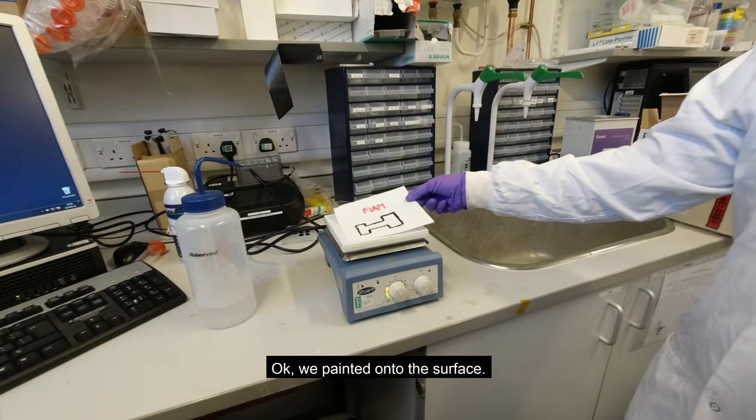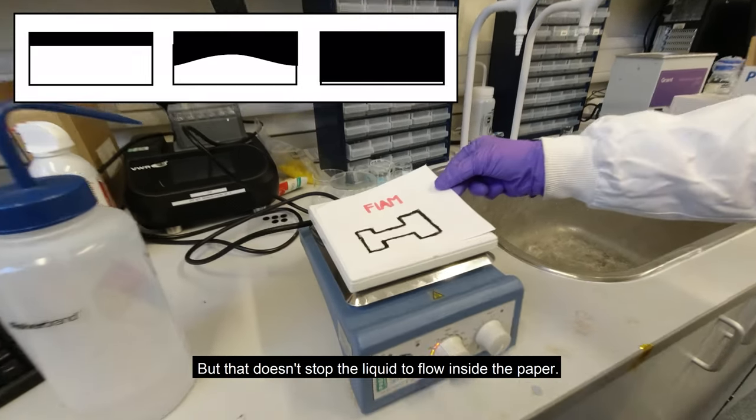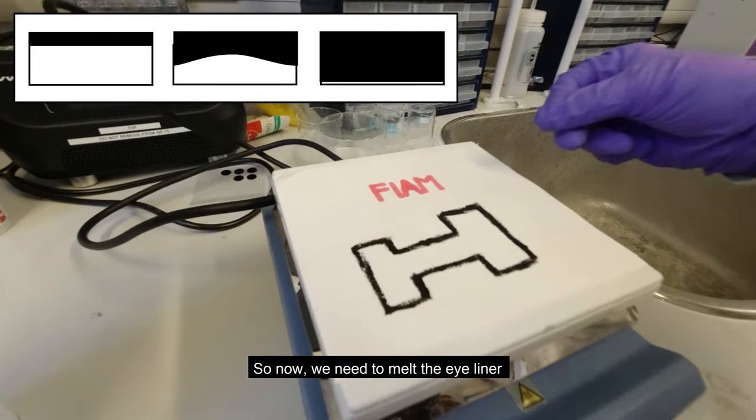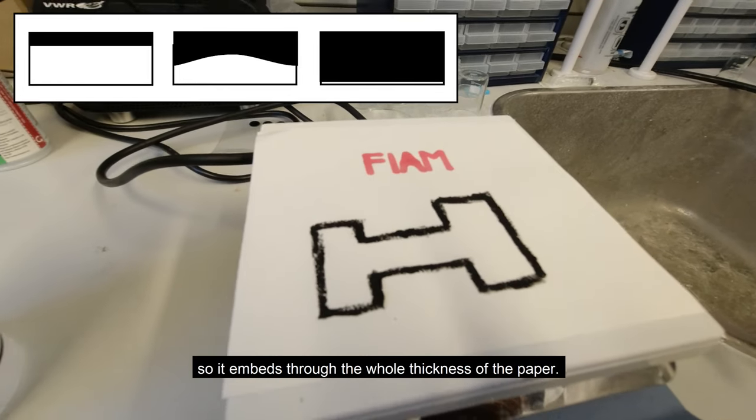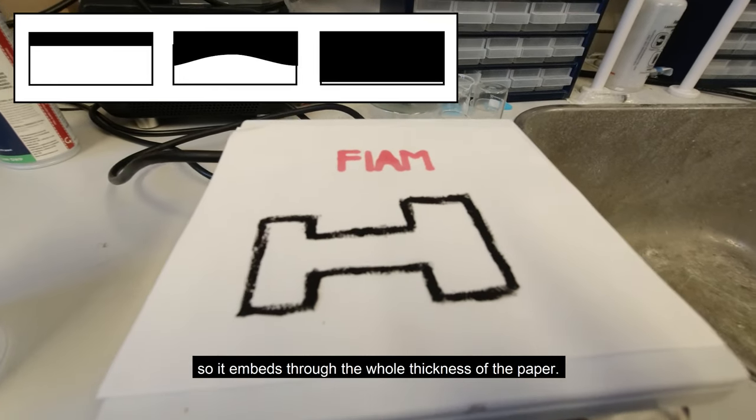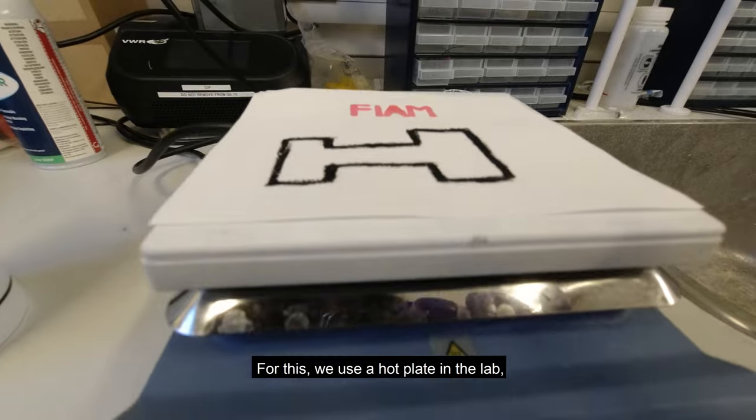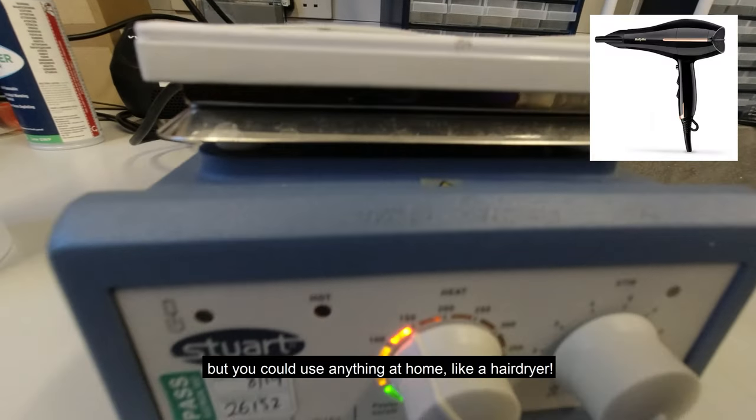Ok, we paint it onto the surface, but that doesn't stop the liquid to flow inside the paper. So now, we need to melt the eyeliner so it embeds through the whole thickness of the paper. For this, we use a hot plate in the lab, but you could use anything at home, like a hairdryer.